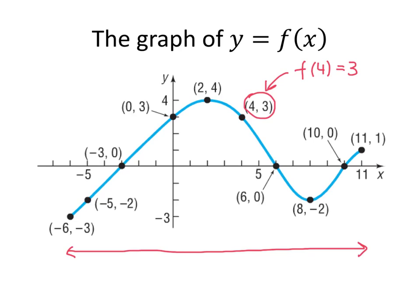And that means that the domain of our function is all x values from negative 6 up to 11. So all x values that are greater than or equal to negative 6 and less than or equal to 11, that's the domain of our function.